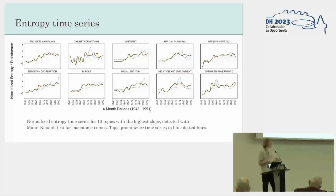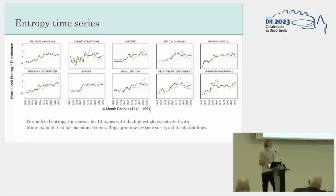So a lot of things are being connected to this topic of austerity already in the 1960s. Using this method, I can identify topics that show an increasing trend and find potential instances of economisation.